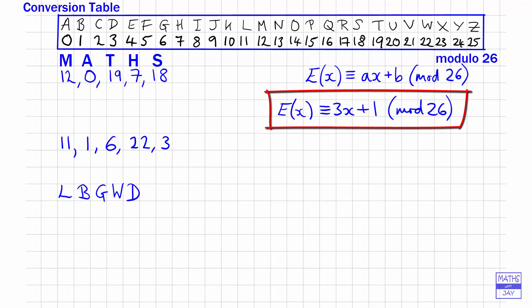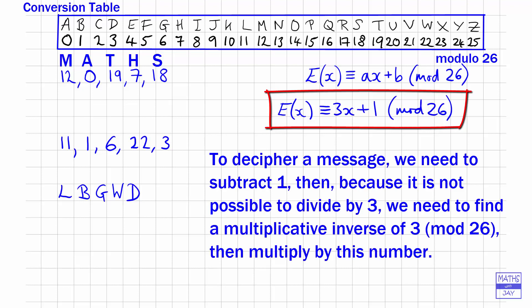But in modular arithmetic we don't have division, so the big problem is how to reverse the multiplying by 3. We need to find a multiplicative inverse of 3, a number we can multiply by to reverse the effect of multiplying by 3. We'll find the multiplicative inverse of 3 in mod 26 next time.